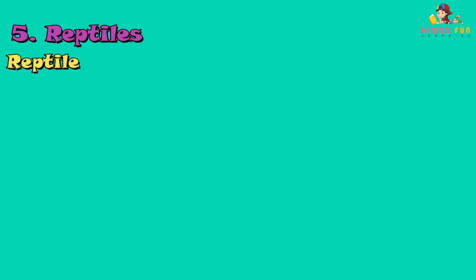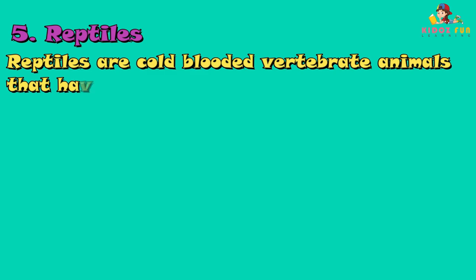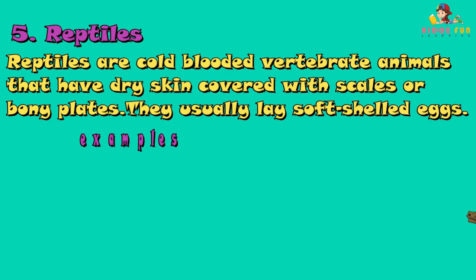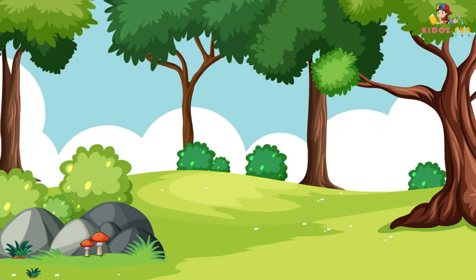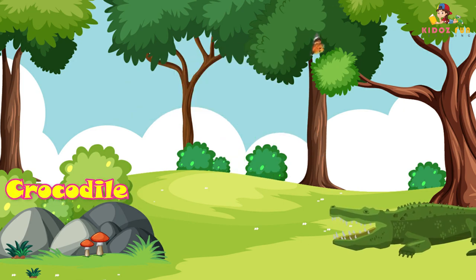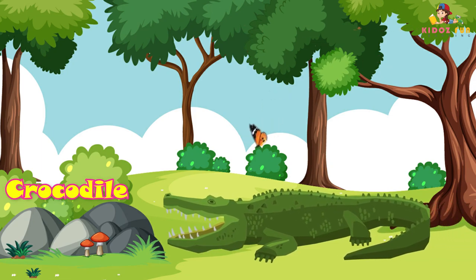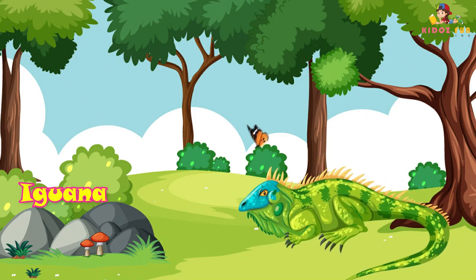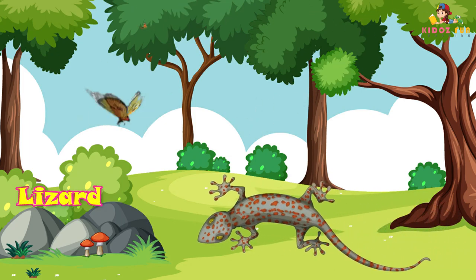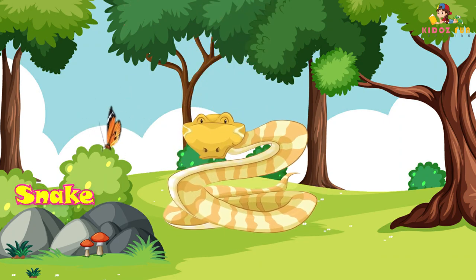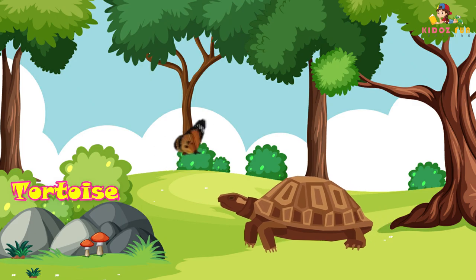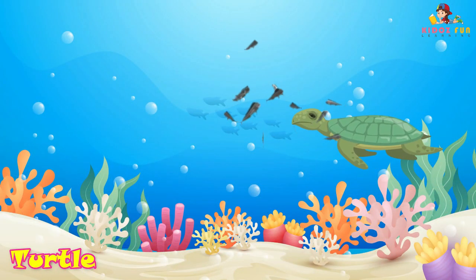Reptiles are cold-blooded vertebrate animals that have dry skin covered with scales or bony plates. They usually lay soft-shelled eggs. Some examples are Komodo dragon, chameleon, crocodile, iguana, lizard, snake, tortoise, and turtle.